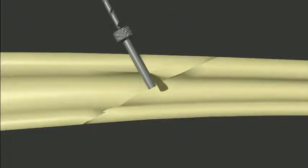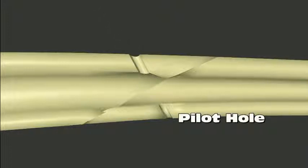A drill sleeve is inserted into the glide hole and directs a smaller drill bit to drill a pilot hole. The pilot hole is the same diameter as the screw.